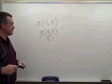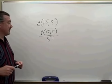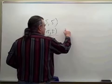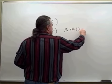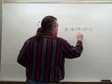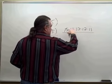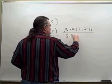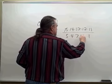So it's permutation of 15 taken five at a time over five factorial, which gives us what? 15 times 14 times 13 times 12 times 11, all that divided by five times four times three times two times one.